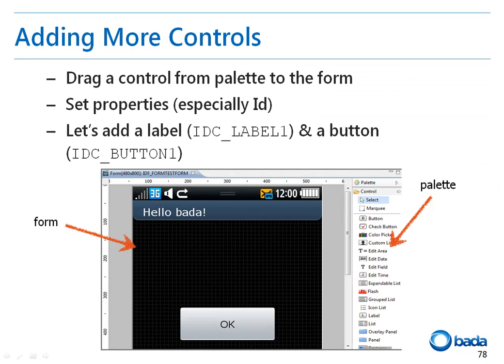Now let's add new controls. On the right side of the window, there is a small window called Palette. The window contains various controls. You can add controls by dragging them from the window and dropping them onto the screen. To use the newly created controls in an application, you have to allocate IDs to them. In this example, we will add a label and a button and assign IDC_label1 as the label ID and IDC_button1 as the button ID.